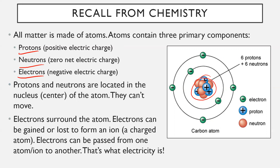Protons in particular don't move — they dictate what an atom actually is. Electrons, however, are the ones that surround the atom and buzz around in circles. Electrons can be gained or lost to form something called an ion — just a charged atom. If you gain electrons, you're gaining more negative pieces, becoming more negatively charged. But if you lose electrons, you become positively charged because you're losing your negative pieces. Electrons can be passed from one atom or ion to another — that's exactly what electricity is. Today we'll look at what happens when something has more or fewer electrons than usual.